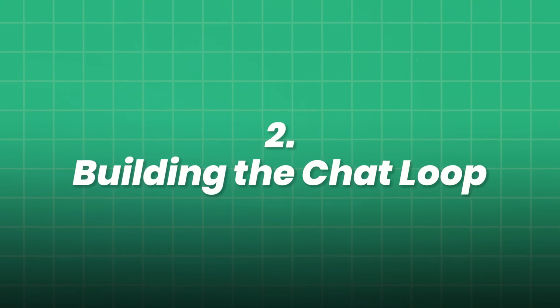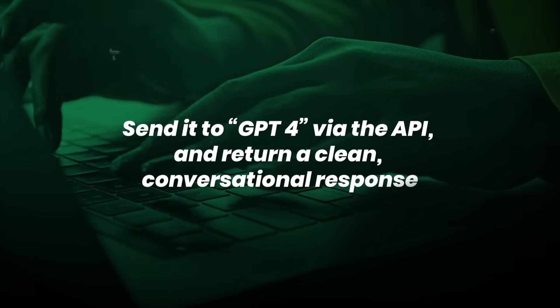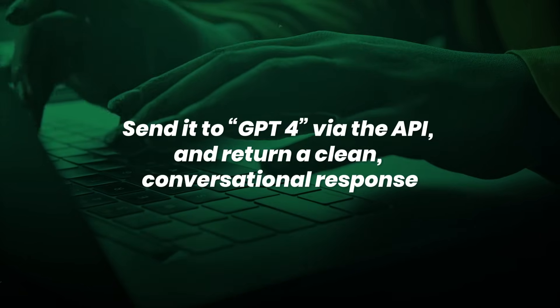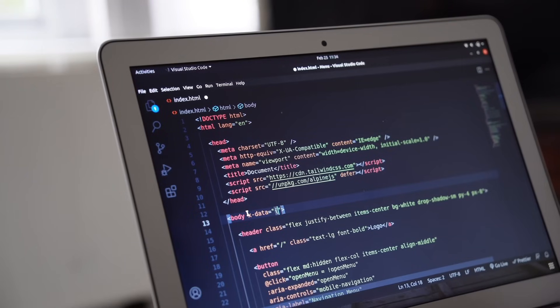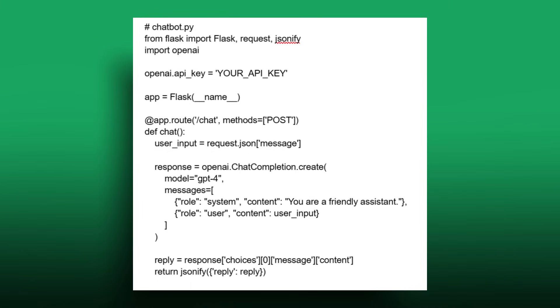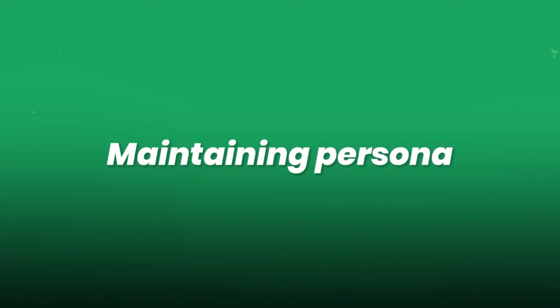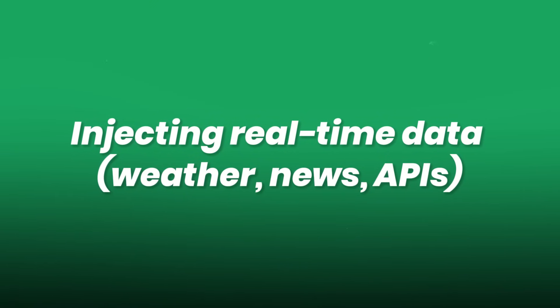Step 2: Building the chat loop. Now let's write the actual logic to capture user input, send it to GPT-4 via the API, and return a clean, conversational response. Let's walk through a minimal but powerful chatbot script in Python using OpenAI, Flask, and a simple front-end. This is the back-end of your chatbot. You can connect this to a front-end UI, Telegram bot, or even voice input. You can make this more advanced by storing chat history, maintaining persona, adding fallback responses, and injecting real-time data like weather, news, or other APIs.